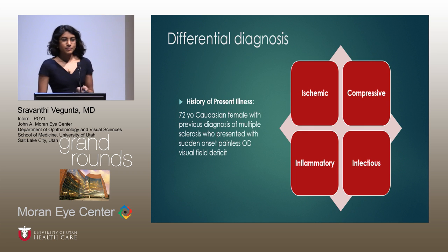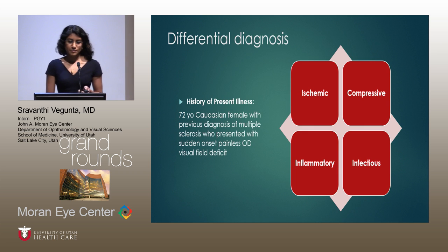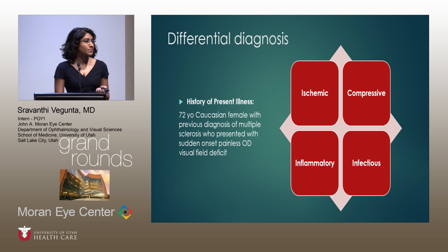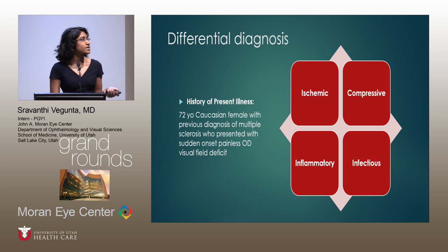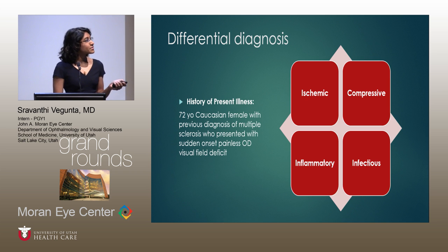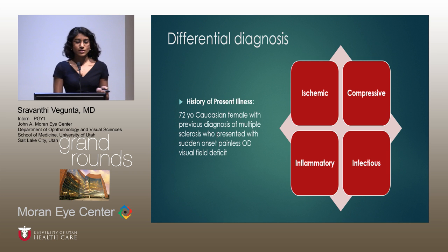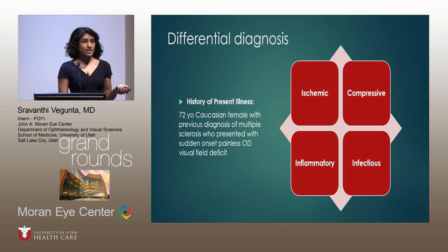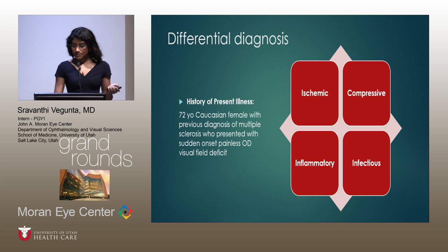Given our case presentation of a patient with right eye sudden onset painless vision loss, our differential included ischemic changes — arteritic or non-arteritic — a compressive optic neuropathy, inflammatory causes such as multiple sclerosis or NMO spectrum disorders, other demyelinating diseases, or even an infectious etiology.